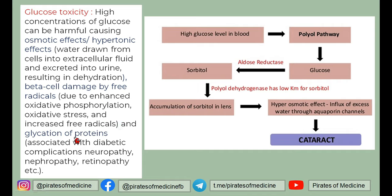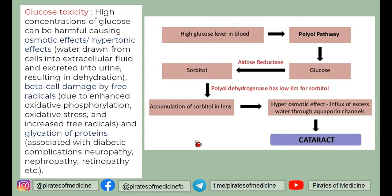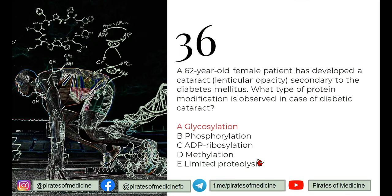Third and most important: glucose toxicity leads to glycation of proteins — glucose molecules attach to proteins, leading to complications like neuropathy, nephropathy, and retinopathy. In hyperglycemia, when hexokinase is saturated, glucose enters the polyol pathway, where it is converted into sorbitol via aldose reductase. Sorbitol accumulates in the lens, causing a hyperosmotic effect which leads to cataract. The protein modification observed in diabetic cataract is glycosylation.